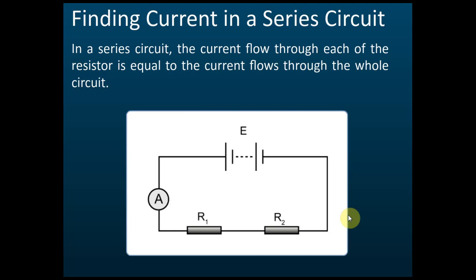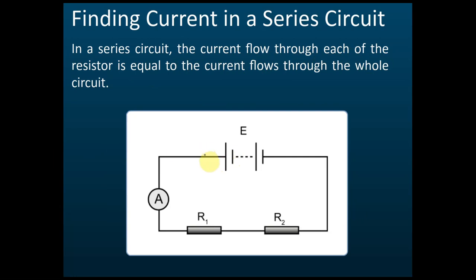Finding current in a series circuit — let's start with an easy one. In a series circuit, the current flowing through each resistor is equal to the current flowing through the whole circuit. So if the current at this point is 2 amperes, then the current at this point is also 2 amperes, and the current here is also 2 amperes.